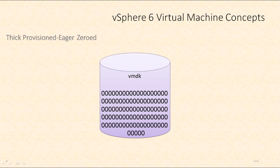The process of writing these zeros can impact applications that write a lot of data, like database virtual machines. Thin provisioned disks zero out these blocks on demand — they zero them out when the application needs them — and therefore those virtual disks won't perform as well as an eager zeroed disk. An eager zeroed disk has zeros written to it up front, at the moment the virtual disk is created, so it won't have to complete that zeroing operation as the application is trying to utilize new space. For this reason, thick provisioned eager zeroed VMs are recommended for virtual machines with write-intensive workloads, such as database virtual machines.